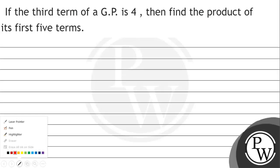Hello everyone, let's read this question. The question says that if the third term of a GP is 4, then find the product of the first five terms. The key concept is the first five terms.